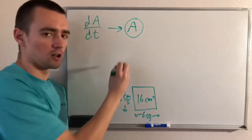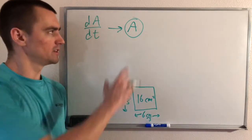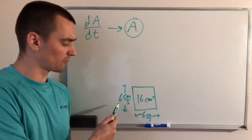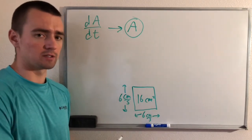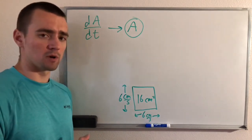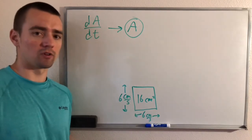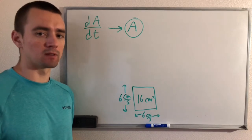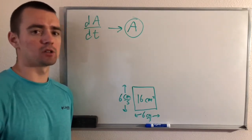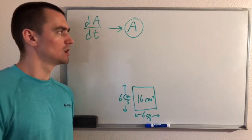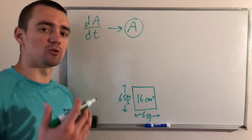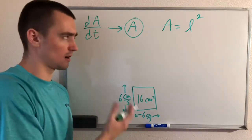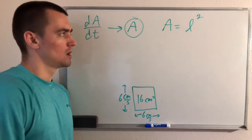So we need to have area in our equation. We also have information about the rate of change of each of the sides of the square. We don't know the length of the sides at this given moment, but we do know the area, so maybe we could use the area to figure out those side lengths. Since we know the rate of change of the side length, that's a good indication that the side length itself should be in our equation. The equation relating the area of a square to its side length is simply: area equals the side length squared, A = L².